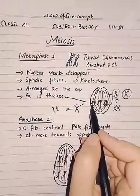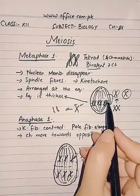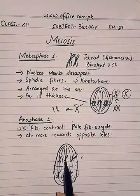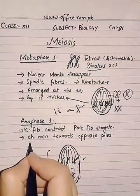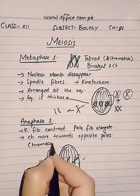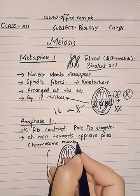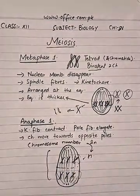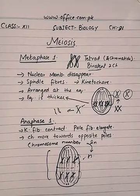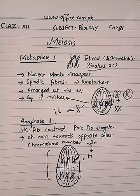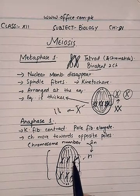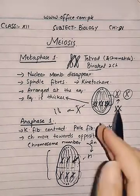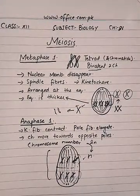Here, the actual reduction of chromosome number takes place. For example, if the cell has a total of six chromosomes, the daughter cells will get three chromosomes — so the chromosome number is reduced from 2n to n. Each pole will receive half the total number of chromosomes. There will be no division of the centromere; instead, the pair will be separated.